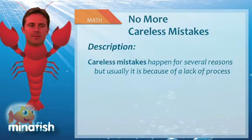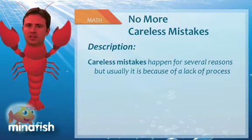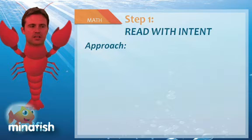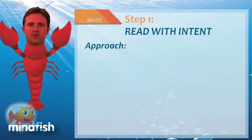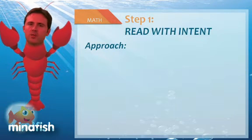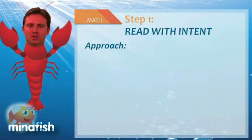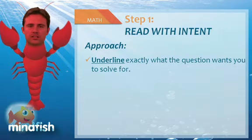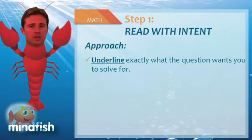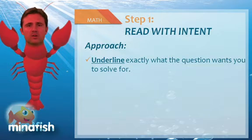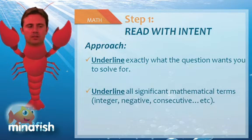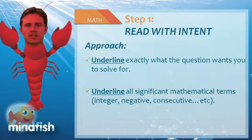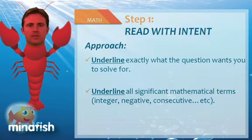Careless mistakes happen for several reasons, but usually because of a lack of process. So the first thing is we need to read with intent. I used to say 'read carefully,' but I realized that doesn't mean too much. I want you to read specifically focusing on two things. Number one, what does the question ask you to solve for? You should underline this so that your brain is tuned into what you need to solve for. Secondly, you should underline all significant mathematical terms, like integer, negative, or consecutive, because these will play a critical role in solving the problem.